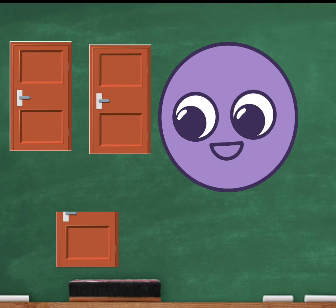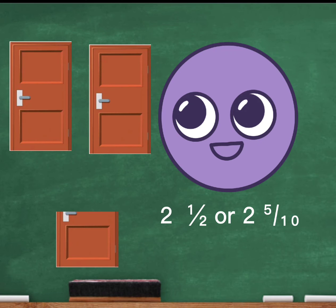Let's talk a bit more about Timmy's doors. If he wants to say how many doors he has as a mixed number, he would say 2 and a half or 2 and 5 tenths.